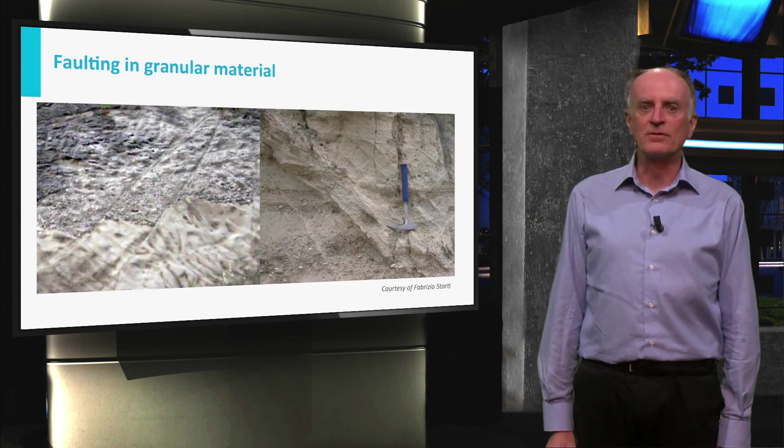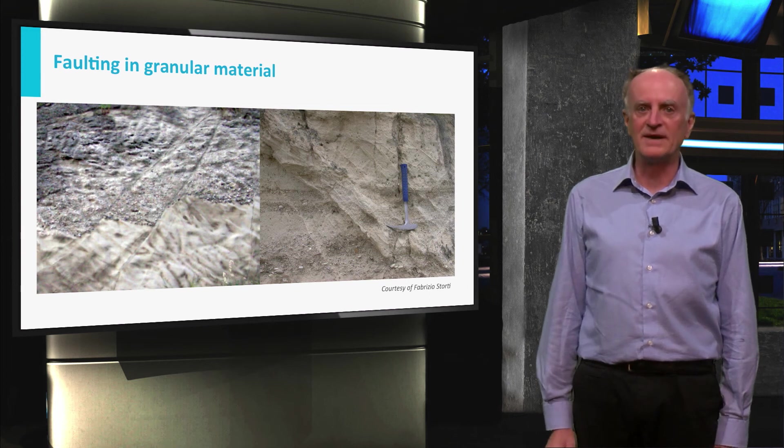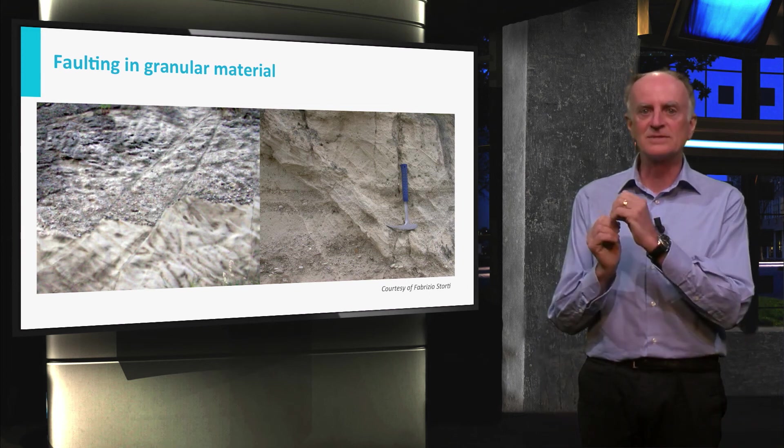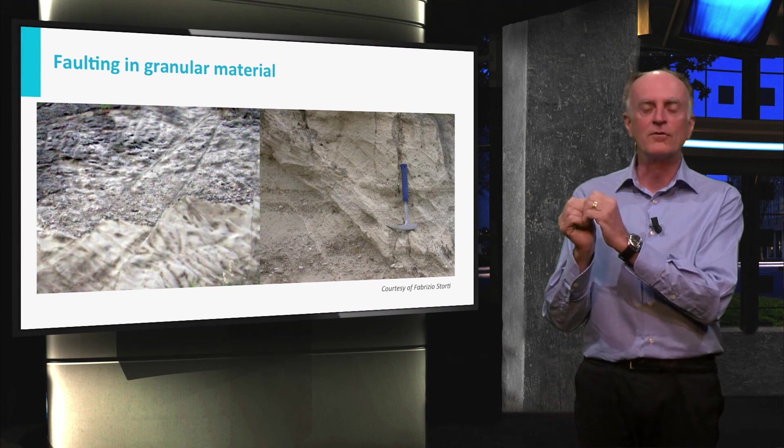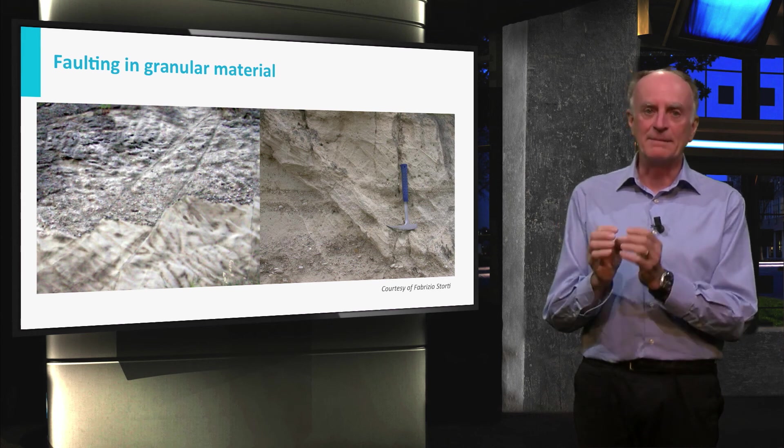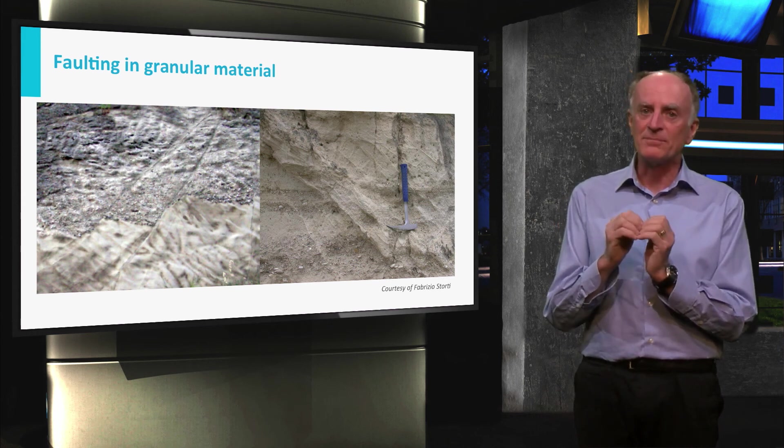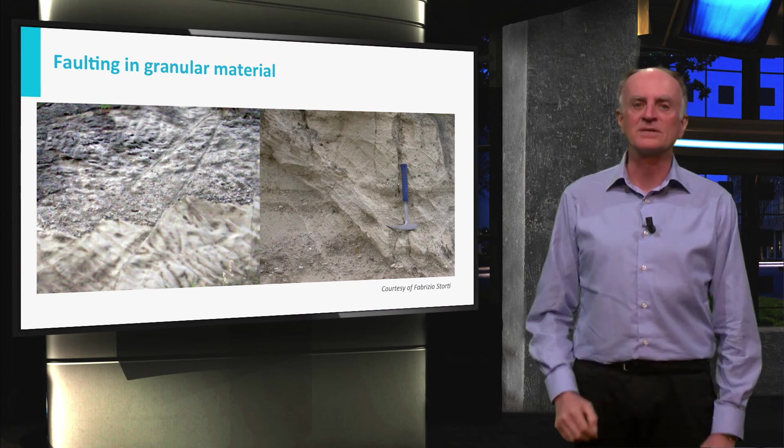When the sediment affected by the fault movement is only partially lithified, then the grains will tend to slide with respect to each other, forming a deformation band. Grains become compacted and some of them might break, resulting in a decreased porosity of the rock.